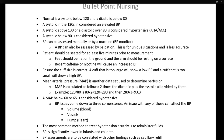Another number used to assess perfusion is the MAP, or mean arterial pressure — a calculated number derived from the systolic and diastolic. It is calculated as: diastolic times 2, plus systolic, divided by 3. For example, with a blood pressure of 120 over 80: 80 times 2 plus 120 equals 280, divided by 3 gives a MAP of 93.3. A MAP below 60 or 65 is considered hypotensive, depending on the source.